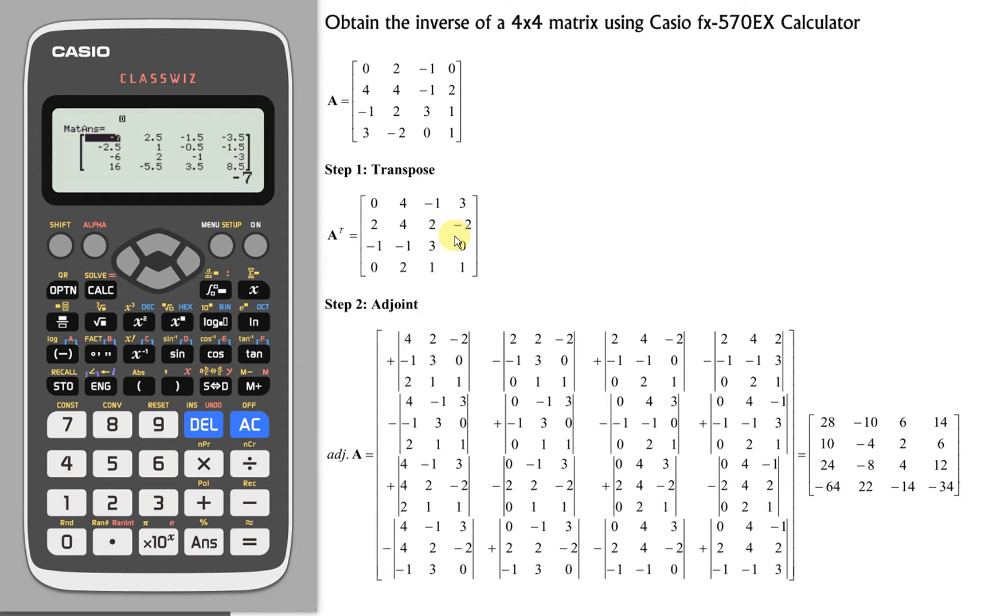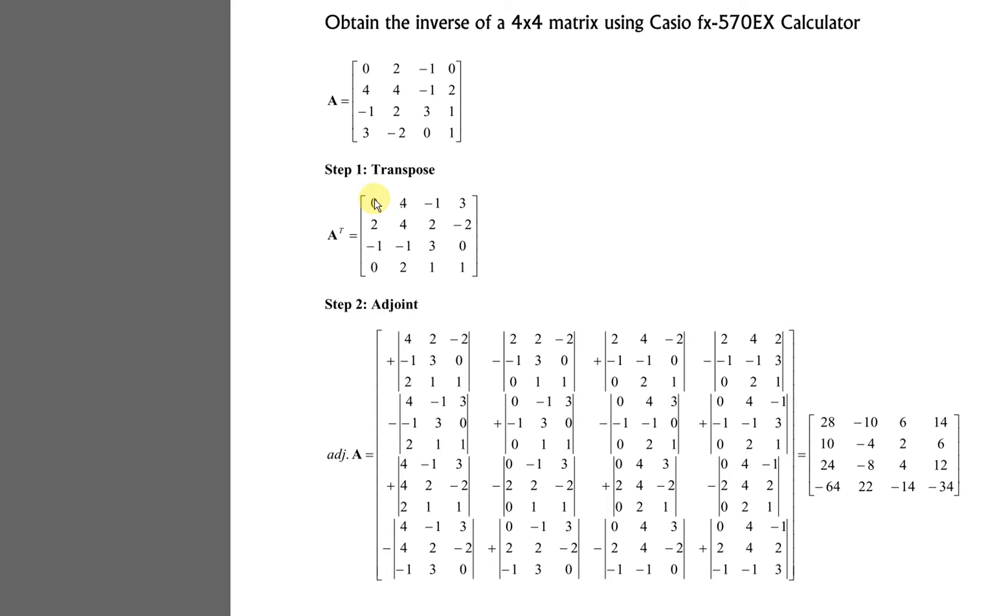After that, we determine the adjoint, meaning to say we have to find the cofactor for each entry. If we have to find the cofactor for 0, then what we have to do here is we will hide the first column, hide the first row. So this entry is going to be determined to obtain the cofactor.